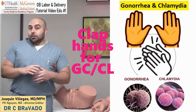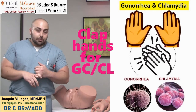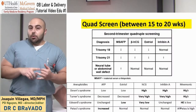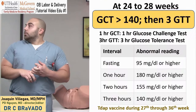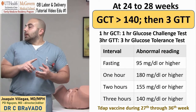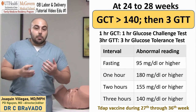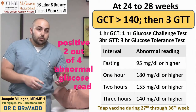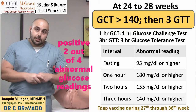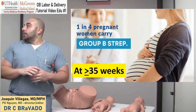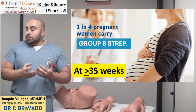Then we look for additional labs: GC, chlamydia, and we also look for the quad screen. Finally, we also look for the glucose challenge test. If the patient fails the glucose challenge, then we go to a three-hour glucose tolerance test. And then we continue with the GBS after 35 weeks.